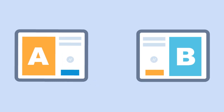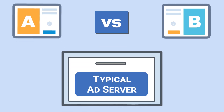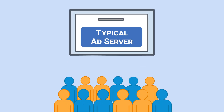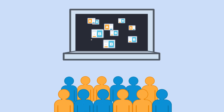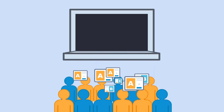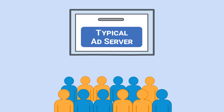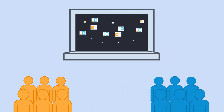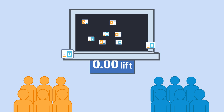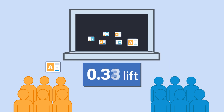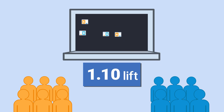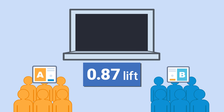As a data-driven marketer, you want to figure out how to increase ad performance by testing creatives. The challenge is that today's ad serving technology can only split groups based on devices or cookies, creating an inconsistent or even inconclusive set of results. This test setup allows for cross-contamination because real people browse the web from a number of devices.